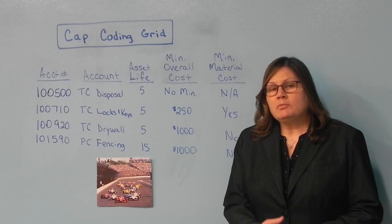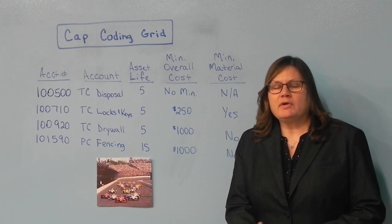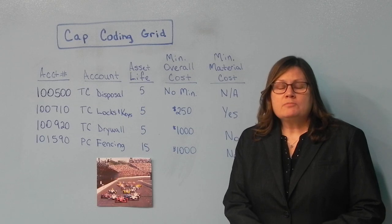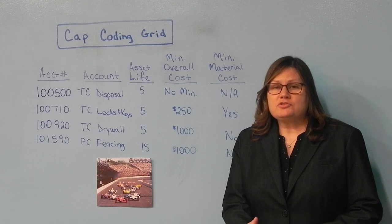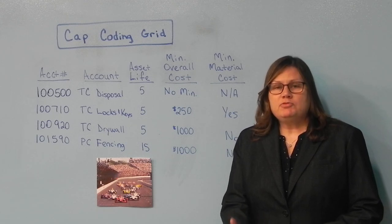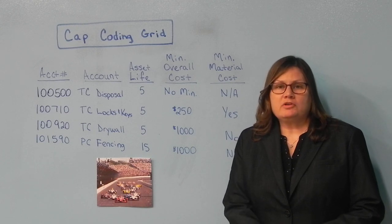First, we're going to look at that minimum overall cost. That's the category I recommend looking at first. Some of your expenditures don't require any minimum cost at all. Looking at new purchases of appliances, if you purchase a garbage disposal for $75, that can be recorded as capital.